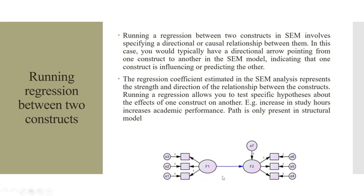Running regression between two constructs, the blue line. Running a regression between two constructs in SEM involves specifying a directional or causal relationship between them. In this case, you would typically have a directional arrow pointing from one construct to another in the SEM model, indicating that one construct is influencing or predicting the other. The regression coefficient estimated in the SEM analysis represents the strength and direction of the relationship between the constructs. Running a regression allows you to test specific hypotheses about the effects of one construct on another. Example: increase in study hours increases the academic performance. Path is only present in the structural model.